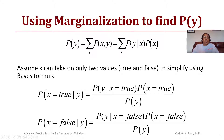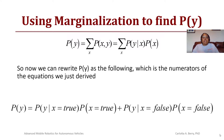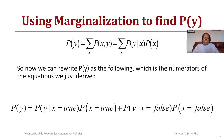We can now write the probability of Y as the summation of the two numerator terms: the probability of Y given X is true times the probability that X is true, plus the probability of Y given X is false times the probability that X is false.